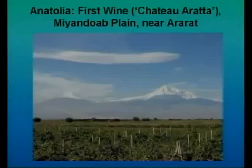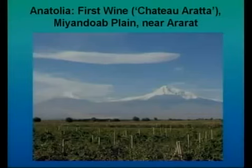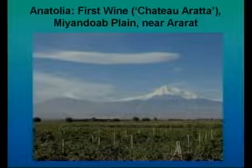In Anatolia, if you like wine, the most ancient wine is a Chateau Arata, and it comes from what's called the Manduab Plain, near the Ararat Range. If you read Genesis, of course, after the flood Noah planted a vineyard — it would have been just below those mountains. And we find the first evidence of wine growing was in that same region.